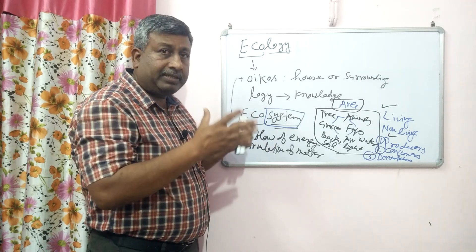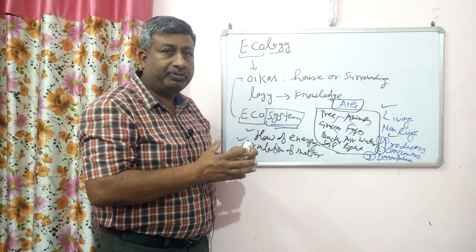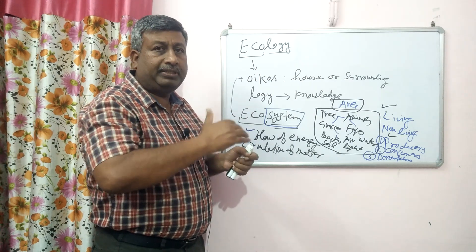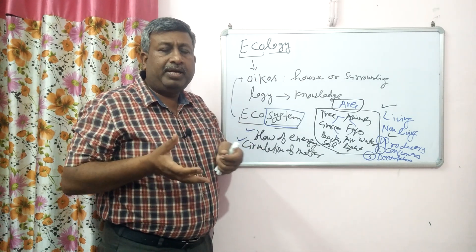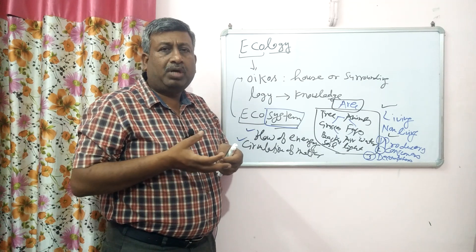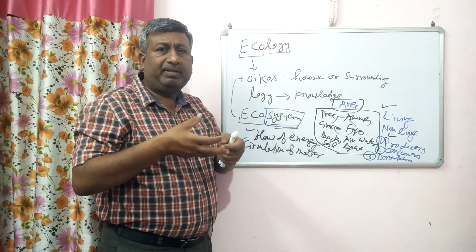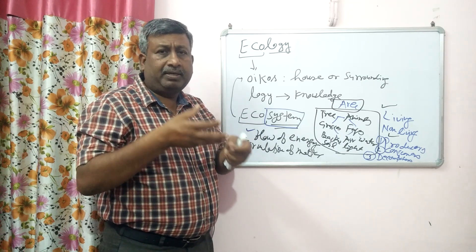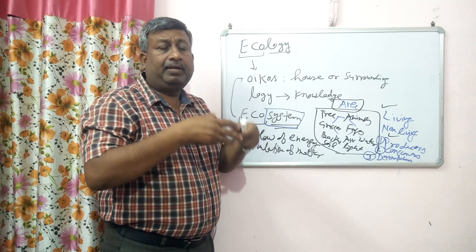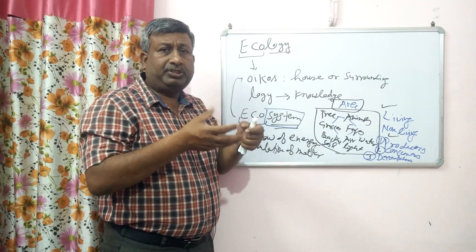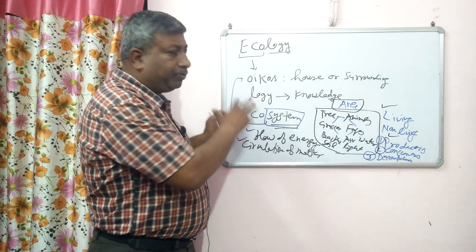So in ecosystem there is a linkage, there are interactions, there are interrelated processes so that there is a flow of energy. This is the ecosystem — in the river there are algae, there are fish, they are related. Algae is a food for the fish, then large fish eat the small fish. So this is the ecosystem.